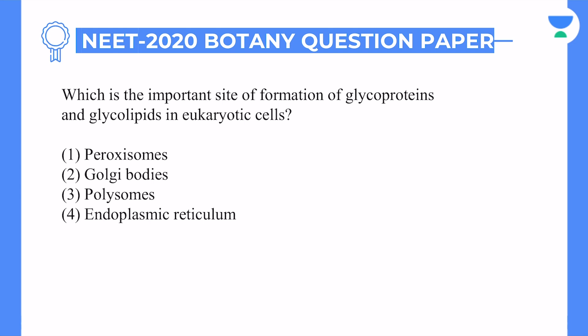The next question: which is the important site for formation of glycoproteins and glycolipids? When you say glycoprotein, this process is known as glycosylation — that means joining your glucose or any type of sugar with protein. This is how we have glycolipid, which is also known as glycosylation.